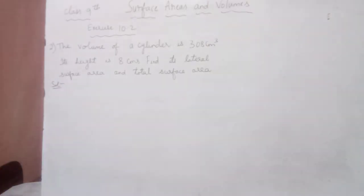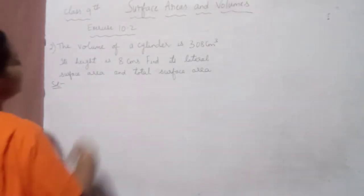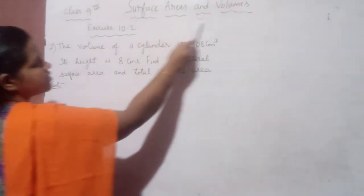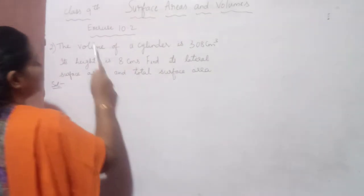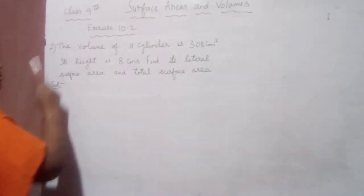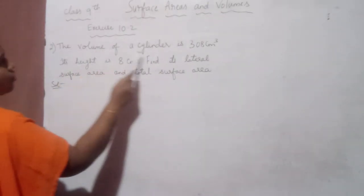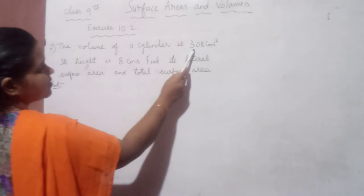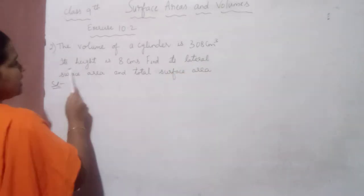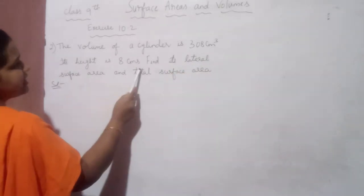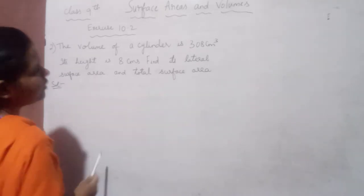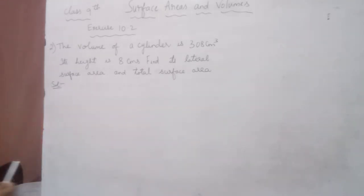Hello students. In our 9th class mathematics, under the chapter surface areas and volumes, in exercise 10.2, this is the second problem. The volume of a cylinder is 308 cm³. Its height is 8 cm. We need to find the lateral surface area and total surface area.